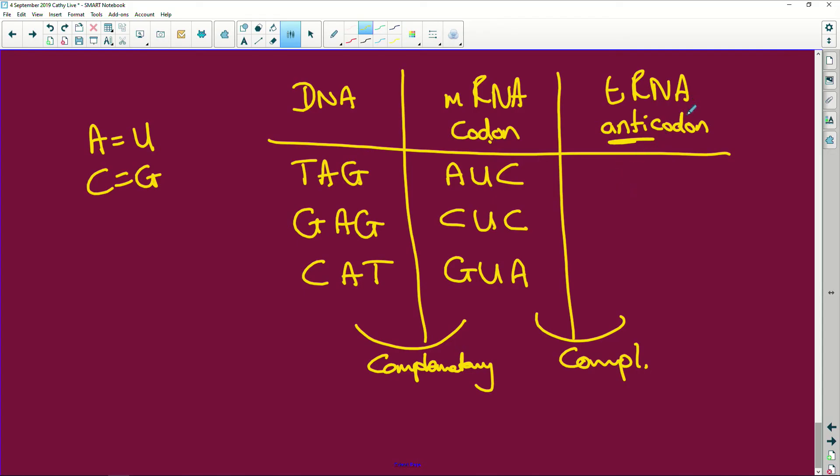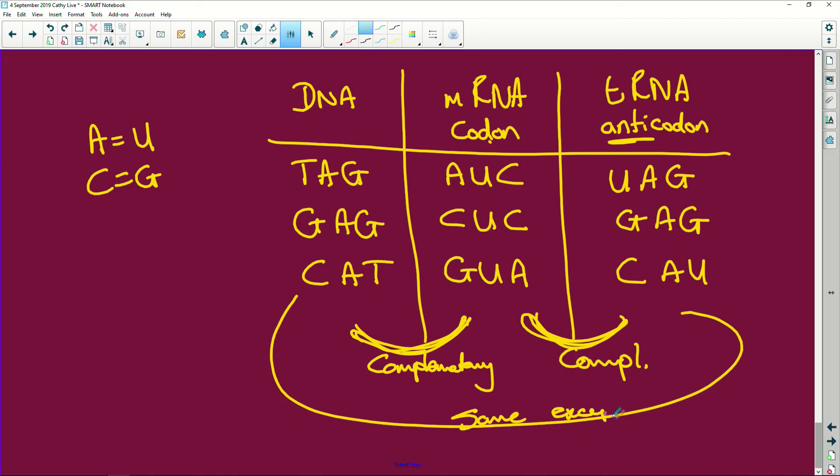So this is going to be—now remember in tRNA there's also no thymine, there is only uracil—so it's going to be UAG, and it's going to be GAG, and we're going to have CAU.